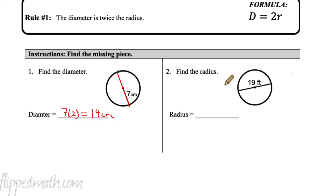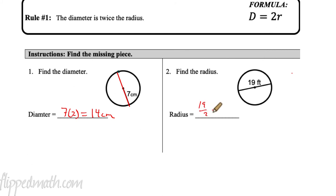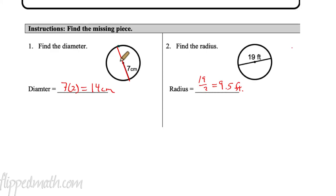Finding the radius is just as easy — we work backwards. The diameter is 19 feet. To find the radius, we take 19 and divide by two, or cut it in half. So 19 divided by two equals 9.5 feet. Finding the diameter and radius — super easy.